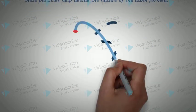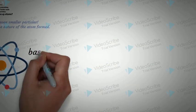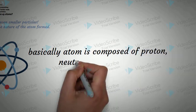Here we have the atom. There are three particles most commonly. Basically, an atom is composed of the proton, neutron, and the electron.